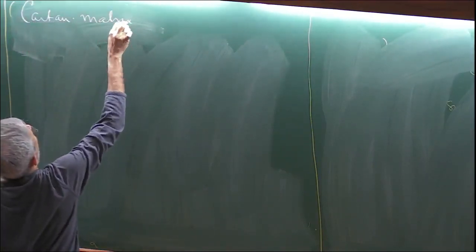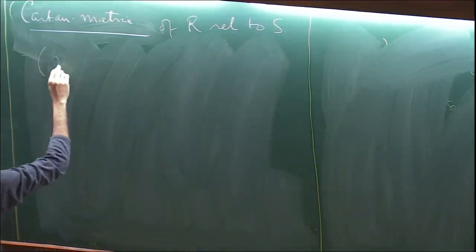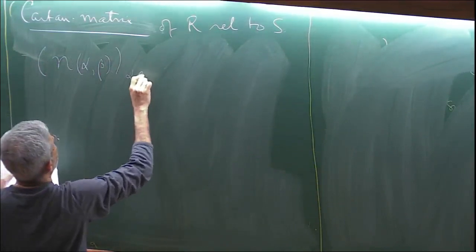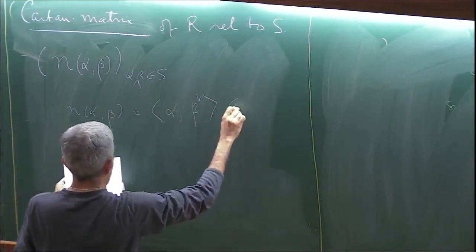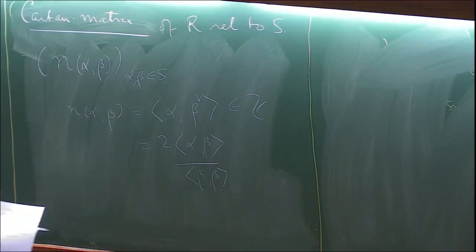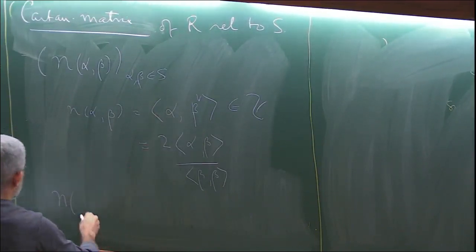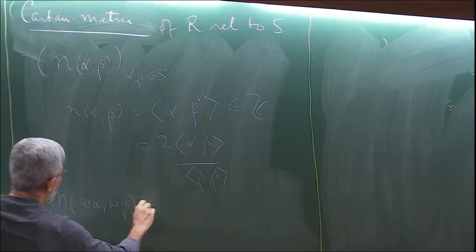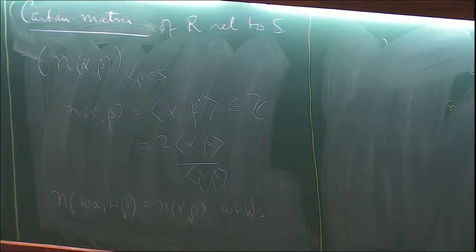There is something called the Cartan matrix of R relative to S. That is the matrix (n_{α,β})_{α,β ∈ S}, where n_{α,β} = ⟨α, β∨⟩ = 2(α,β)/(β,β). One can observe that this is W-invariant. With this out of the way, I want to get to the main goal: discussing parahoric groups in the simplest situation.